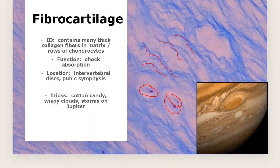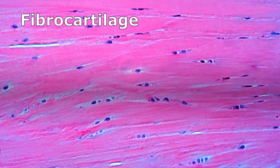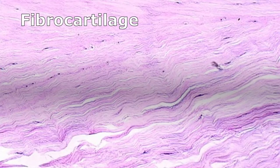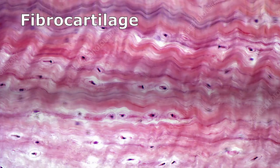Tricks for fibrocartilage: cotton candy, wispy clouds, smoke in the air, or storms on Jupiter. In images it can look like wavy bacon or show lines of nuclei like ants crawling across cotton candy — that may be what gets you over the finish line on identifying fibrocartilage. Function: shock absorption. Location: intervertebral discs, pubic symphysis.